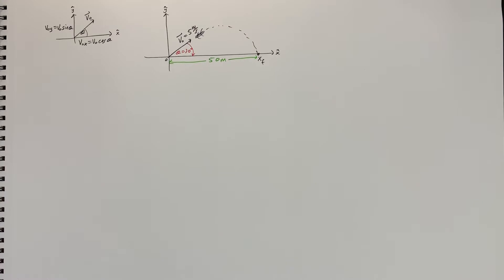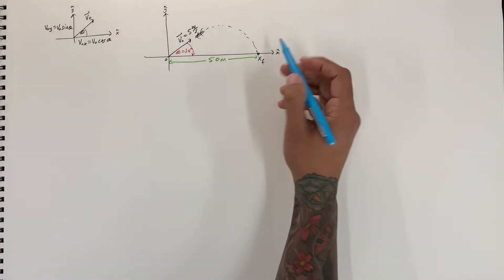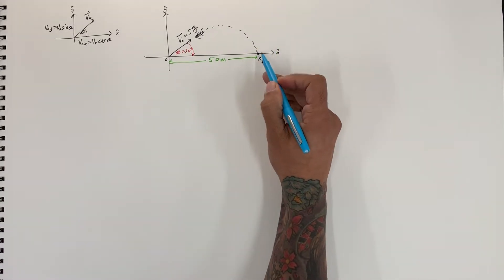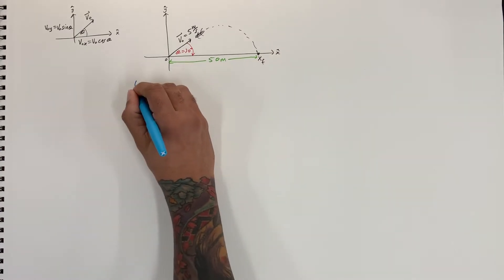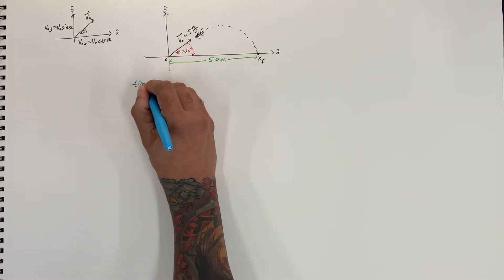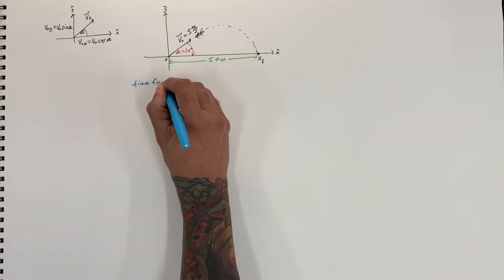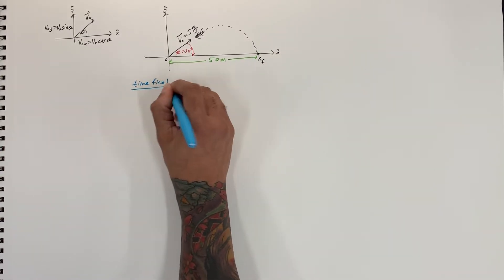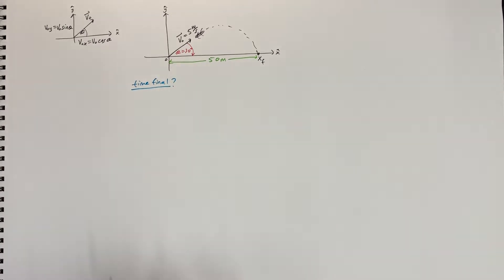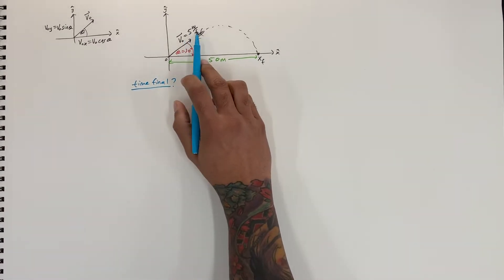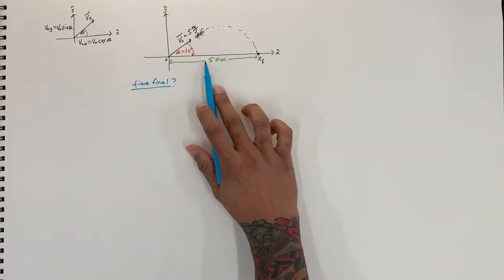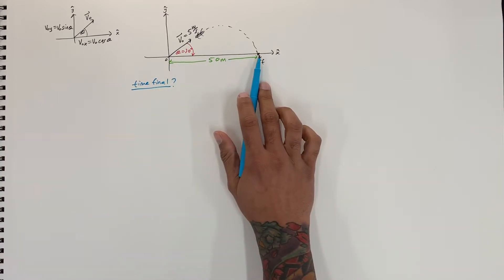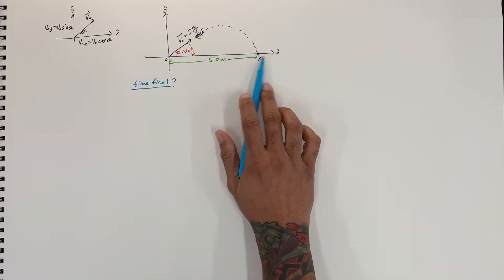We're asked for the time it takes to land — that's the time final. We're given the angle, the initial velocity, and that it landed 50 meters away.